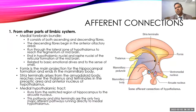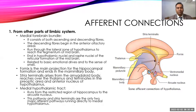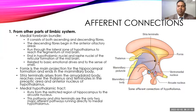Connections are a very important part of understanding the physiology of the hypothalamus. Looking at afferent connections — those coming to the hypothalamus — it receives various fibers from the limbic system via the medial forebrain bundle, which consists of ascending and descending fibers. It also receives fibers from the entire olfactory area, so smell sensations bring information to the hypothalamus.